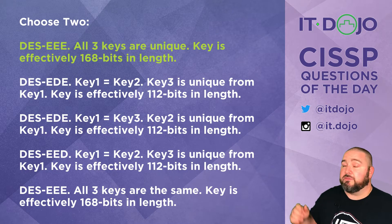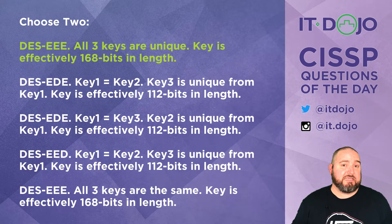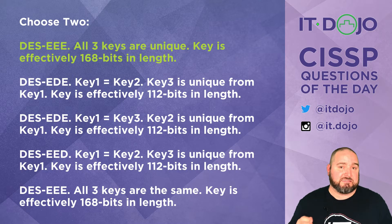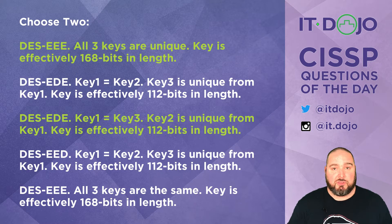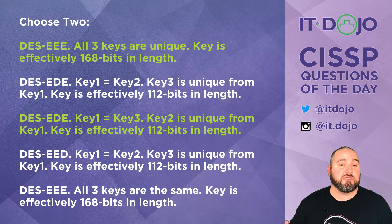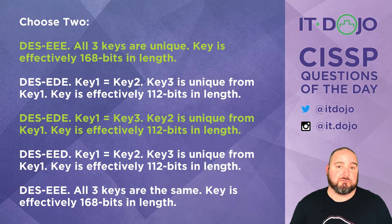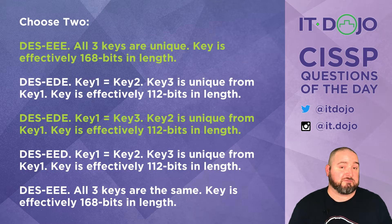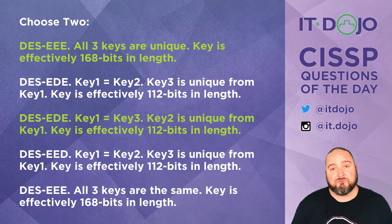The second correct answer is DES-EDE2 — encrypt, decrypt, encrypt — where key one is the same as key three, and key two is unique. So you actually have two unique keys, and key one is used in both the key one and key three portions of the encryption. Because you have two separate keys at 56 bits each, you have a total of 112 bits of effective encryption. Those are the two right answers.